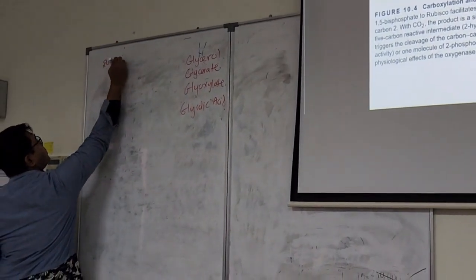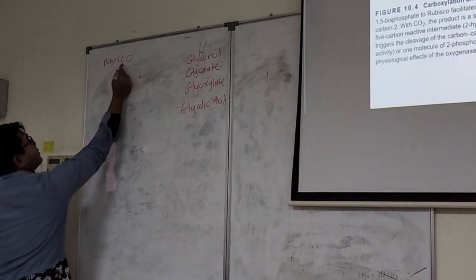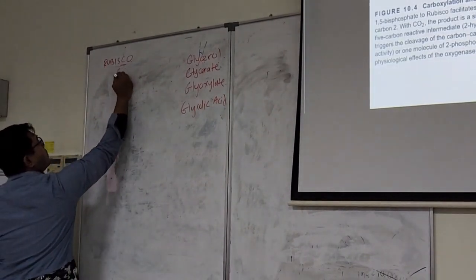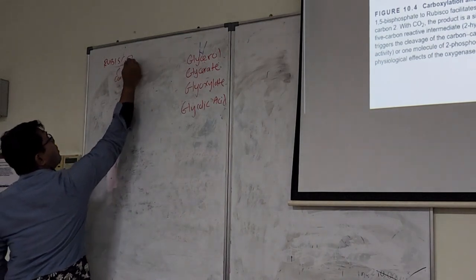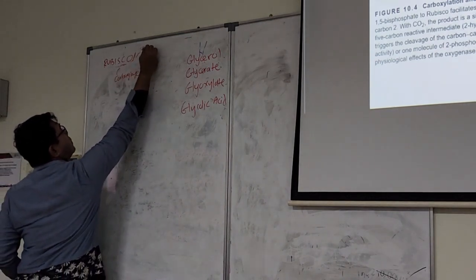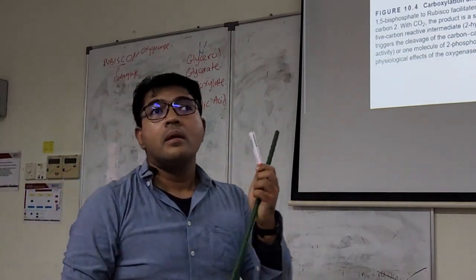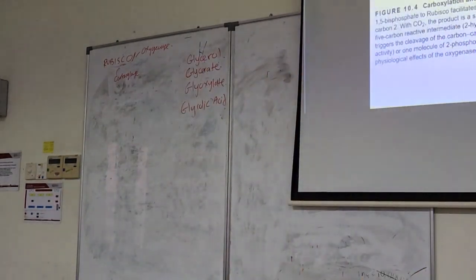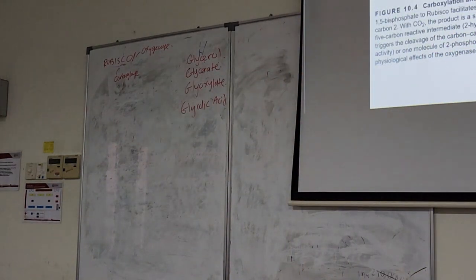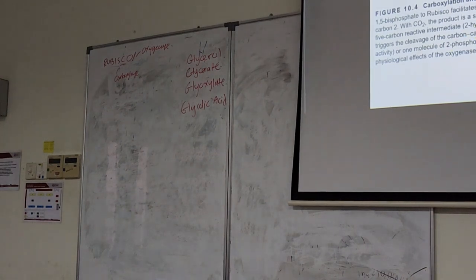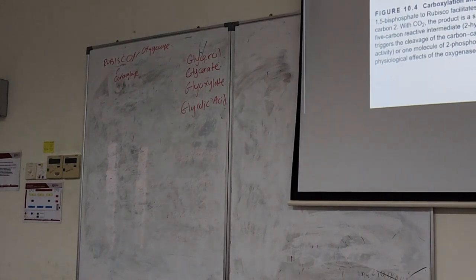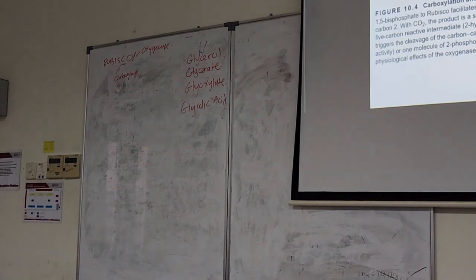RuBisCO, so the problem with RuBisCO is it has carboxylase reaction and also it has oxygenase reaction. If the RuBisCO takes CO2 and then fuses with RuBP, you go up here. You will get the one that you saw earlier, the three phosphoglycerate, and then this will proceed to photosynthesis, two molecules of it.